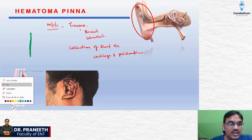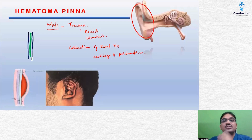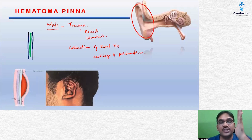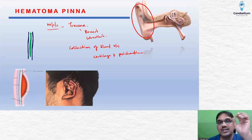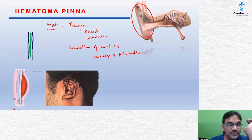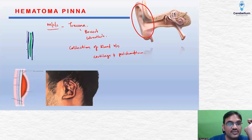Surrounding the cartilage, you will have a perichondrium attached to it. Cartilage itself cannot get any nutrition — it is a mesodermal derivative. For the nutrition of the cartilage cells, its overlying perichondrium is important. So wherever there is cartilage, it will be lined by a perichondrium on either side, and on either side of the perichondrium you will have a skin lining.